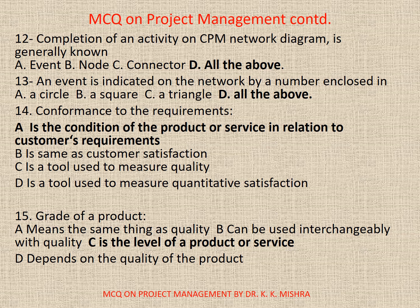Question 12: Completion of an activity on a CPM network diagram is generally known as — Options: A. Event; B. Node; C. Connector; D. All the above. Correct option is D: All the above. Question 13: An event is indicated on the network by a number enclosed in — Options: A. A circle; B. A square; C. A triangle; D. All the above. Correct option is D: All the above.